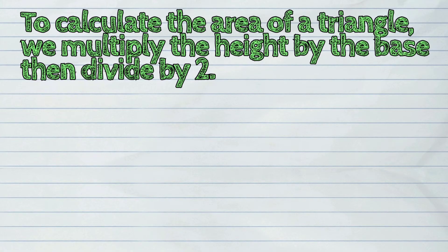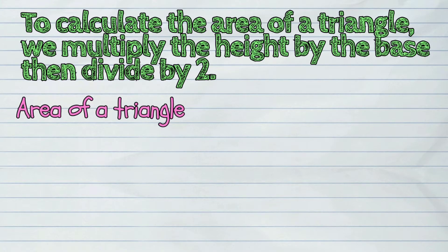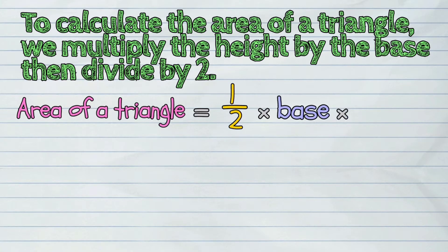To calculate the area of a triangle, we multiply the height by the base, then divide by two. This gives us a general formula of: Area of a triangle equals one-half times base times height.